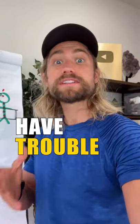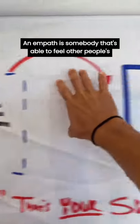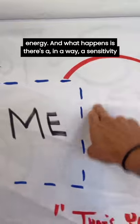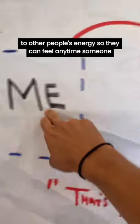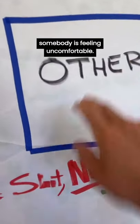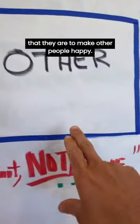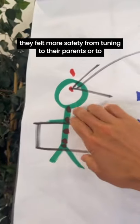This is why empaths have trouble setting boundaries. An empath is somebody that's able to feel other people's energy. What happens is there's a sensitivity to other people's energy, so they can feel anytime somebody is feeling uncomfortable. Because of that, a lot of times they'll change the way that they are to make other people happy. But here's the thing: this stems from childhood trauma, where as a kid they felt more safety from tuning into their parents or other people.